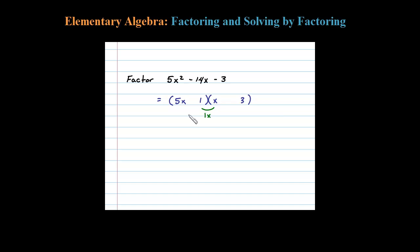1x and 15x adds up to -14 if the 15 is negative. 1 minus 15x is -14x. So that's telling me the 3 here better be negative and the 1 should be positive. That'll make my middle term -14x.